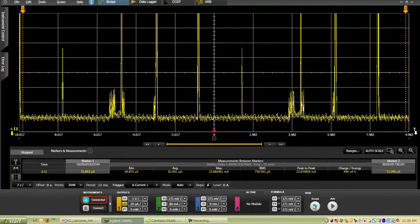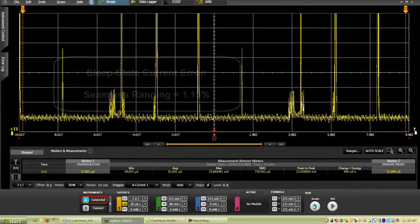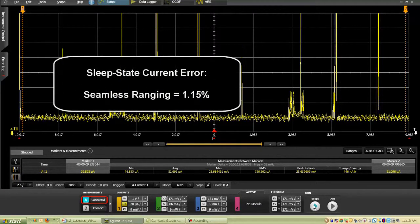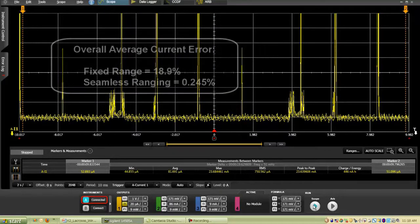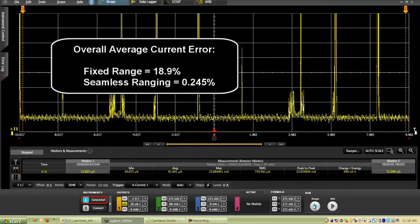With seamless ranging, we can now measure the 10 μA sleep state current with an error of only 1.15%. And with seamless ranging, the measurement error of the overall average current improved from 18.9% to 0.245%.